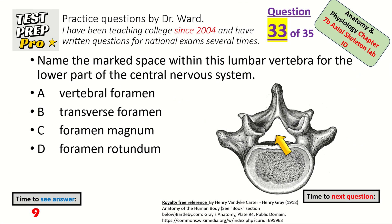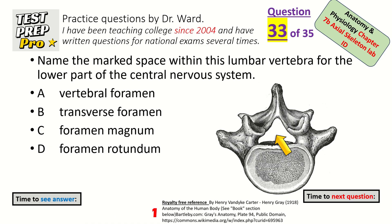Name the marked space within this lumbar vertebra for the lower part of the central nervous system — it's a large triangular space. It's the vertebral foramen.